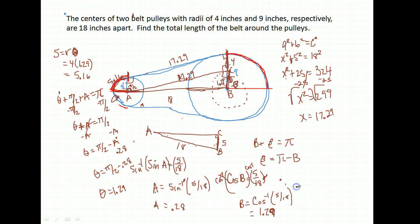We were going to find our β by subtracting that from the straight line, which was a full π. So our β over here is π minus 1.29 radians.